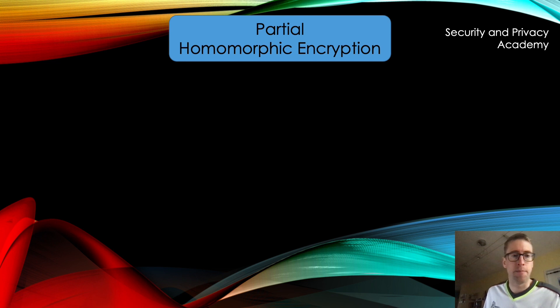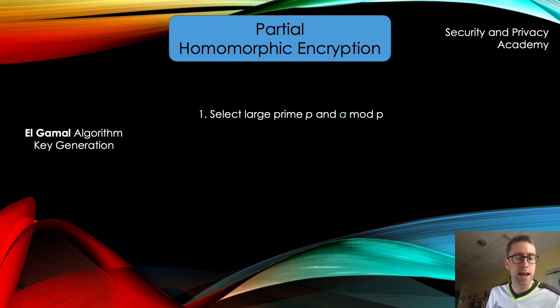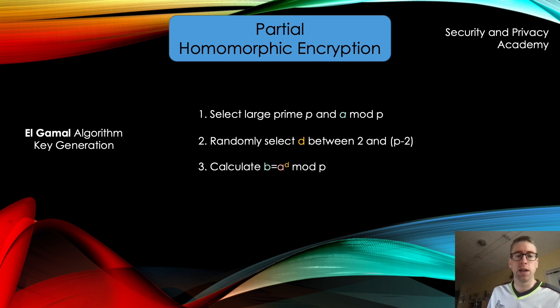Now let's look at homomorphic encryption and why we're here in this video. So we will only cover the El Gamal algorithm in this video. The principle is the same for RSA and Paillier, even though Paillier is a bit more complicated, but more on that later. Now first let's look at how the key generation with El Gamal works on a very high level. I will just go through the algorithm. First we select a large prime P and an A mod P. Then we randomly select a D between 2 and P-2. And we next calculate B equals A to the power of D mod P. And that's it. That concludes the key generation with the public and private keys. We will come back to these calculations. That's why I show them.